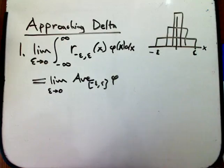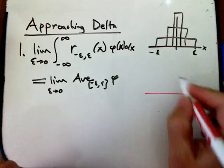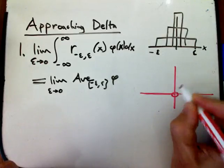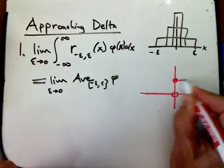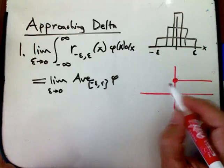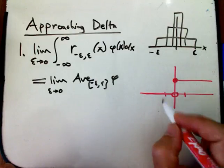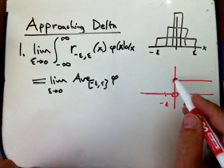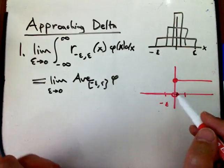If you don't want to get so wacky, we could look at, say, this step function. Then the average values on the symmetrical interval would converge to one-half.